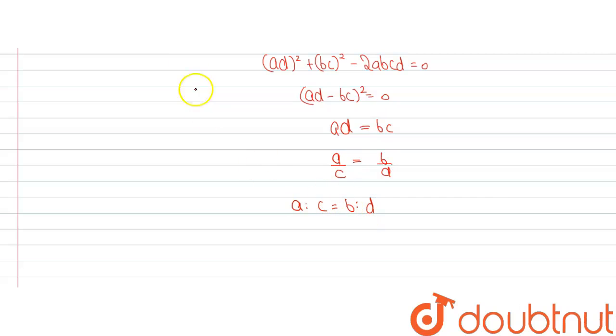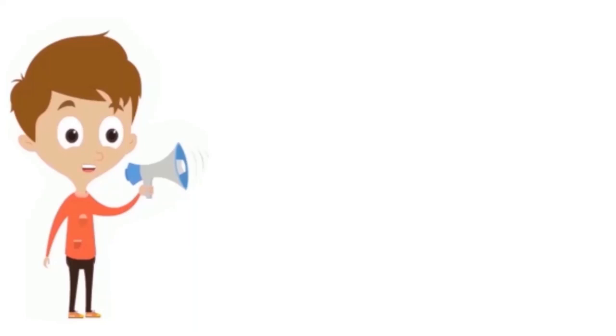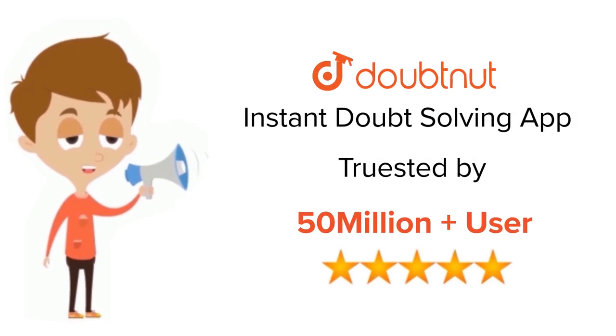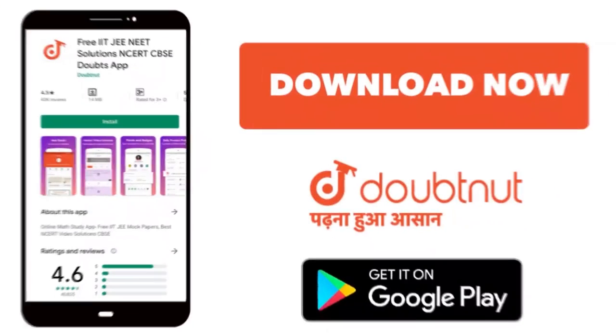Therefore we can say that a, b, c, d are in continued proportion. For class 6 to 12, IIT-JEE and NEET level, trusted by more than 5 crore students. Download Doubtnut today.